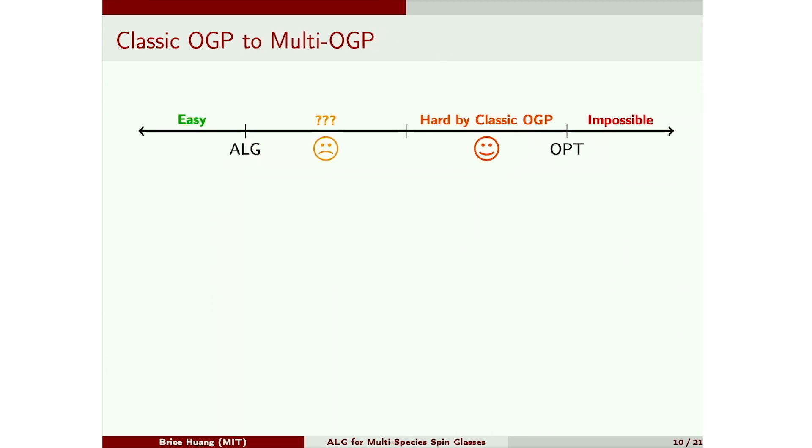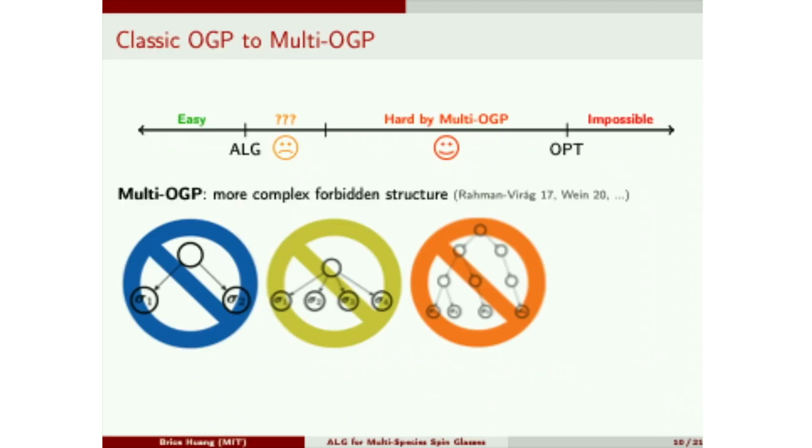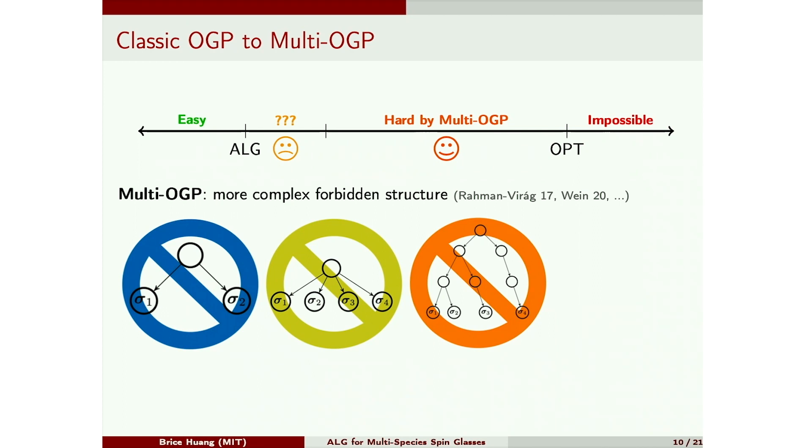And this framework has been quite successful at showing hardness above some intermediate value between alg and opt. So it shows that in this middle-right region, these objectives, even though they exist, are hard for algorithms to find. And the natural next question is, well, what about this middle-left region, and can we show hardness closer to alg? An idea that's gotten a lot of mileage is the multi-OGP, where we kind of run the same argument, but with a more complicated forbidden structure. And over many works, this has pushed hardness closer to alg in many random optimization problems. And in the problem of maximum independent set, in two very nice papers by Rahman-Virag and by Alex Wein, they're actually all the way to alg in the maximum independent set problem. So that leads to the question, well, in this model, can we get all the way?